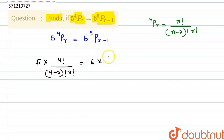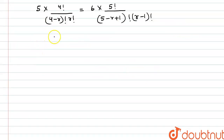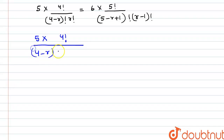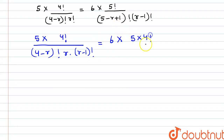And this is equal to 6 times 5 factorial divided by 5 minus r plus 1 factorial and r minus 1 factorial. Now if we write this as 5 into 4 factorial divided by 4 minus r factorial, and r factorial can be written as r into r minus 1 factorial. And 5 factorial as 5 into 4 factorial, divided by 6 minus r factorial into r minus 1 factorial.